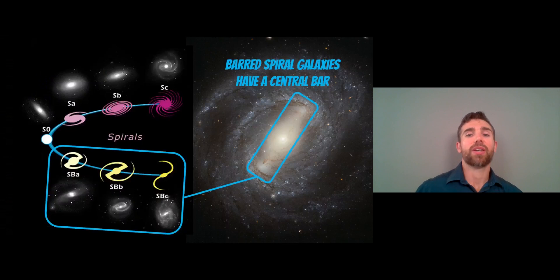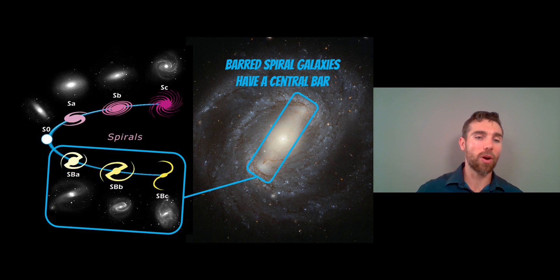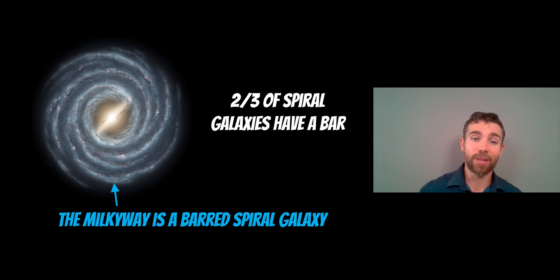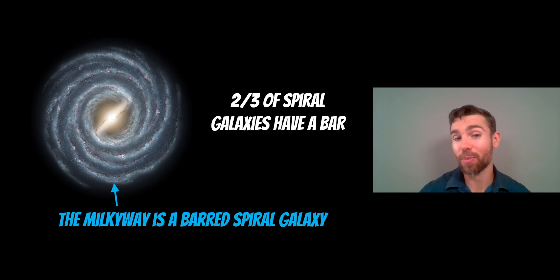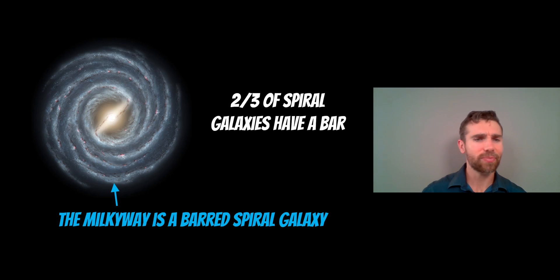Barred spiral galaxies still have a central bulge right in the center, but extending from that to the spiral arms there's an almost straight bar-like structure, which normal spirals don't have. About two-thirds of all spiral galaxies have a bar — and the Milky Way is a barred spiral galaxy, so we're actually inside one right now. That's not a real image of our galaxy since we're inside it; it's a rendering of what we'd expect it to look like, based on the many barred spiral images we do have.